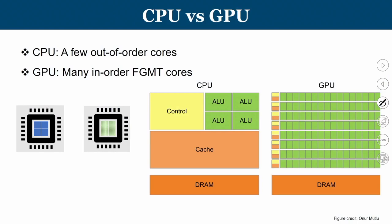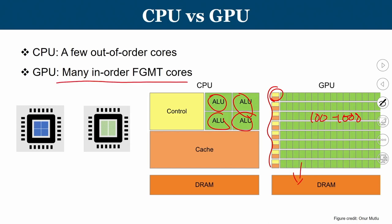Just a quick recap: we already learned about the difference between CPUs, which consist of a few out-of-order cores, and GPUs, which have hundreds to thousands of cores with their own memory and small control units connected to RAM. In short, a GPU has many in-order fine-grained multithreaded cores, whereas a CPU consists of a few out-of-order superscalar processors.